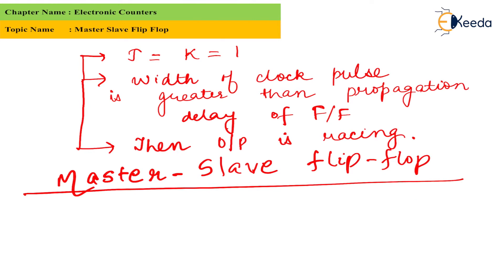There is nothing new — we are using our basic element of the flip-flop. Instead of using one stage, I will use another stage. By connecting one flip-flop with another and combining two flip-flops, we can overcome the problem of race-around.